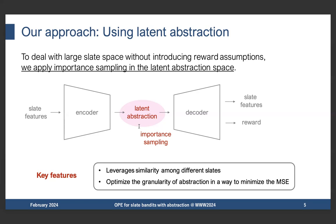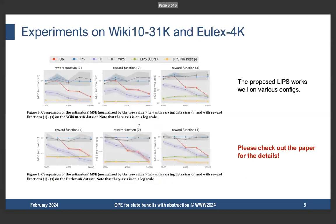In our paper, we also discuss how to optimize the abstraction to minimize the mean squared error and enable accurate policy evaluation of slate recommendation. We conduct experiments on two real-world datasets — WikiTent 31000 and UREx4K — and observe that our proposed Latent IPS, or LIPS, shown as the green line, enables very accurate estimation across various configurations. Additional experiment results, theoretical analysis, and details on optimizing slate abstraction are described in the paper. Please check out the paper for the details. Thank you.